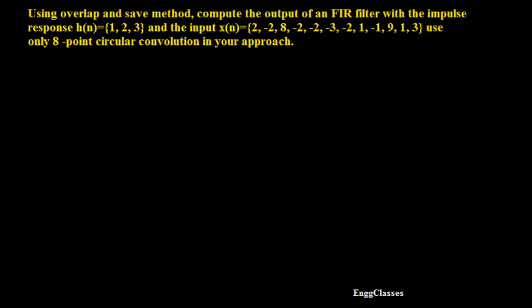Hello everyone, welcome to NG Classes YouTube channel for a video lecture series on digital signal processing. In this video we will consider a numerical on overlap and save method. The task is: using overlap and save method, compute the output of an FIR filter with the impulse response h[n] given, and the input x[n] given. Use only 8-point circular convolution in your approach.